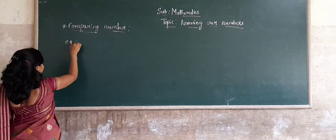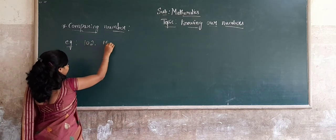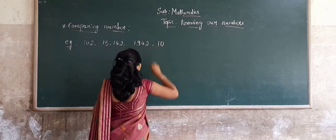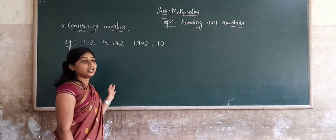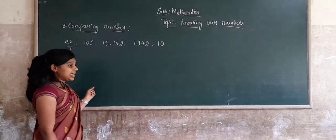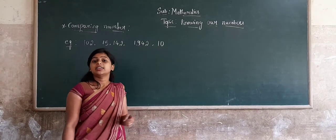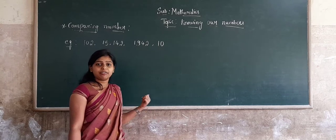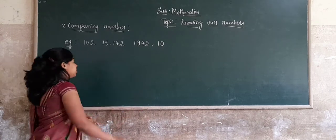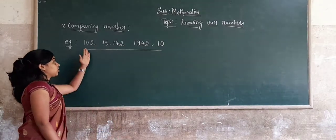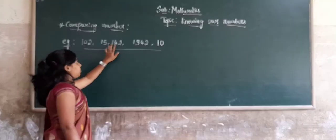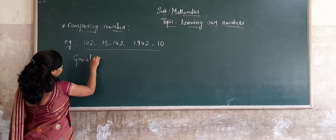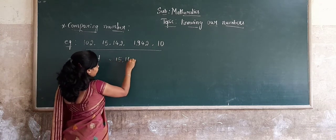For example, you know our rule for finding the greatest and smallest given number. Suppose they give a 5-digit number, we consider the 10,000 place. They give a 4-digit number, we consider the 1,000 place. Suppose they give all numbers in 3-digit form, we consider the 100 place. If numbers have different digit counts — say a 3-digit, 5-digit, 4-digit, and 2-digit — we can easily find that the greatest number is 15,142.